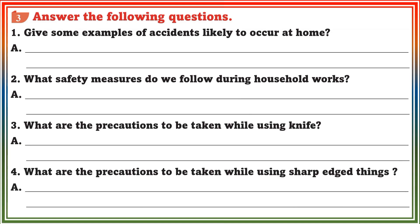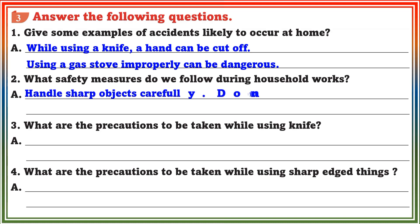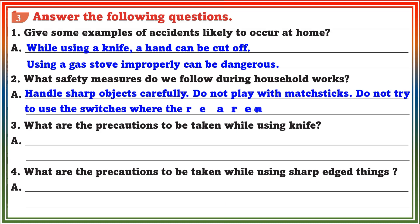Section 3: Answer the following questions. Question 1: Give some examples of accidents likely to occur at home. Answer: While using a knife, a hand can be cut. Using a gas stove improperly can be dangerous. Question 2: What safety measures do we follow during household works? Answer: Handle sharp objects carefully, do not play with matchsticks, do not try to use switches where there are no proper insulations.